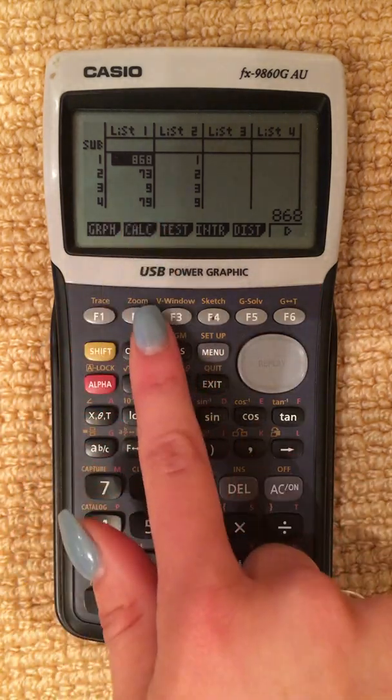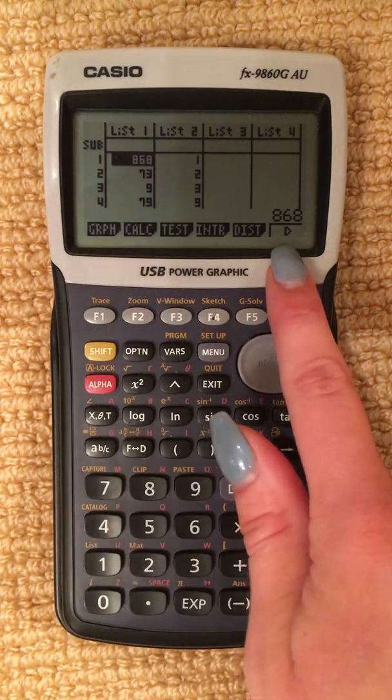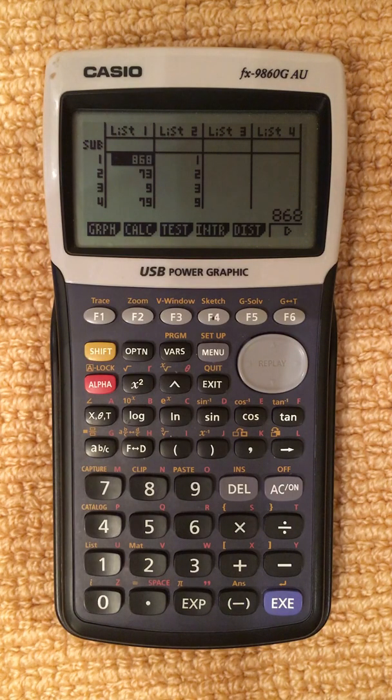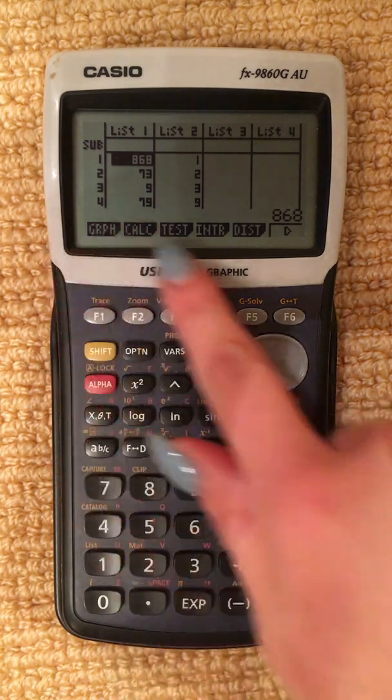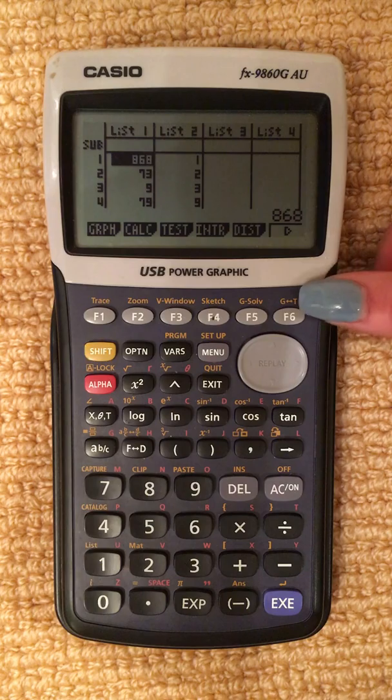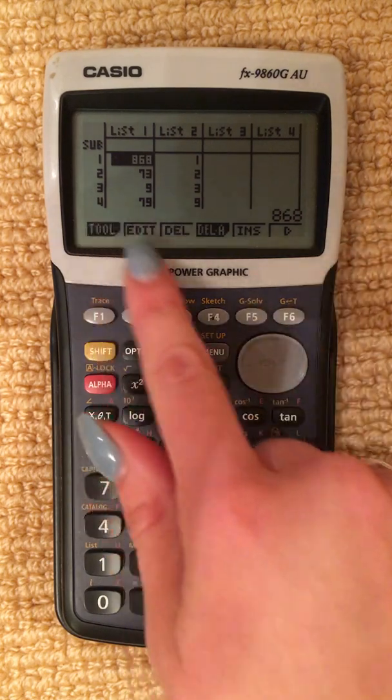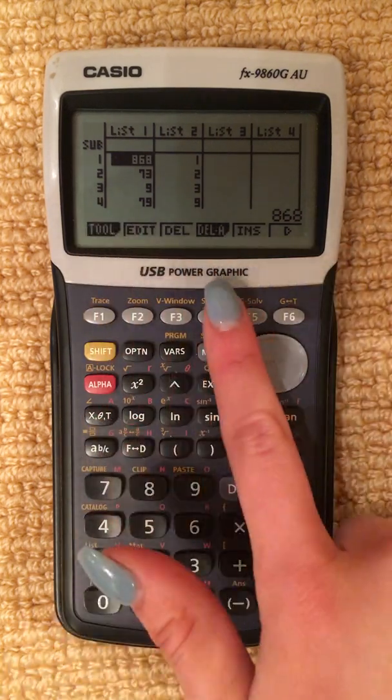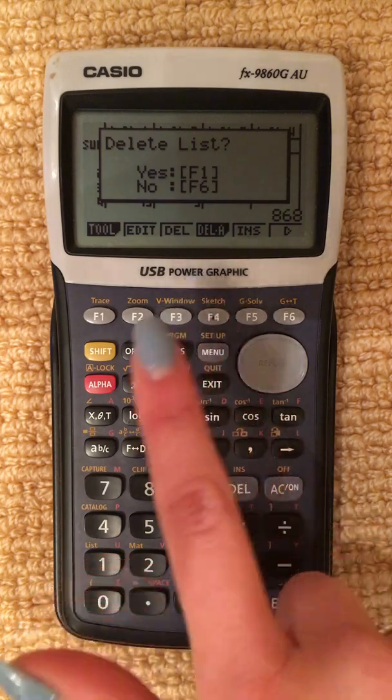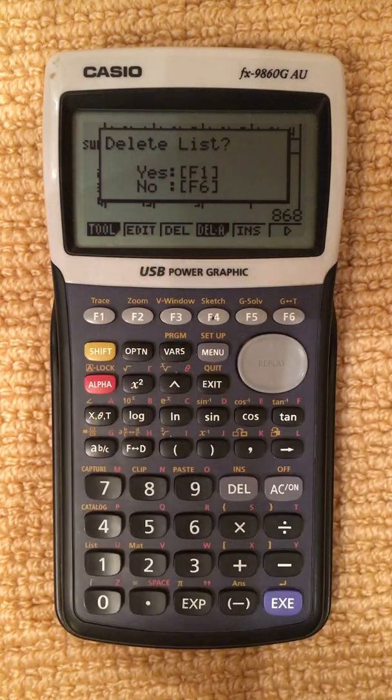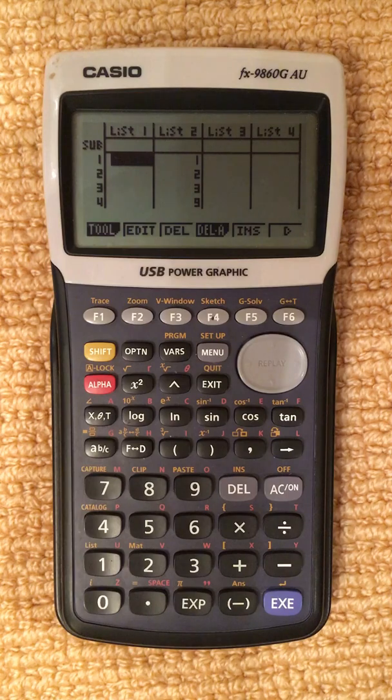The buttons below are the corresponding tabs. We want to find the tab that says DEL-A on it. There is not one that says it there, so press the arrow and go across. There we go. DEL-A, F4. Press F4. It will give you the options to delete the list. Press F1 for yes. There we go.